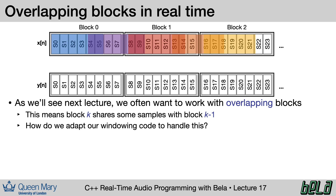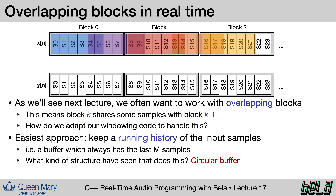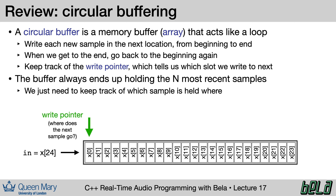How should we adapt our windowing code to handle this overlap? Previously we filled up an entire buffer, and when full we calculated the FFT and then emptied it and started from zero. A more general approach is to always keep a running history of our input samples — a buffer where at any time we can always find the last window of samples. The structure that does exactly this is the circular buffer. It's a computationally efficient way of keeping a running history of our signal. What our code will do is once every so often pass the most recent samples from the circular buffer into our FFT. The interval between these calculations is known as the hop size.